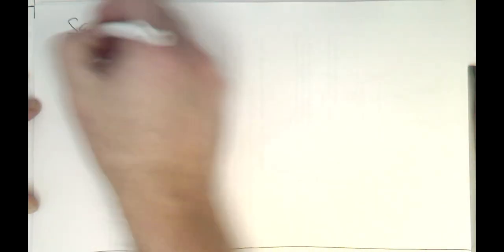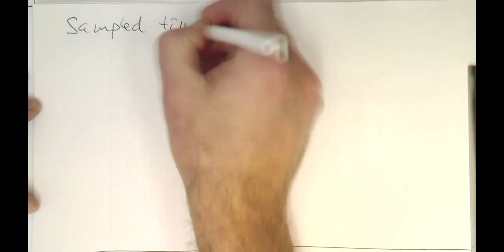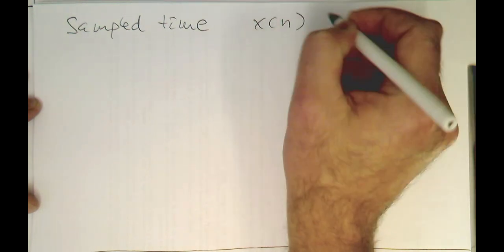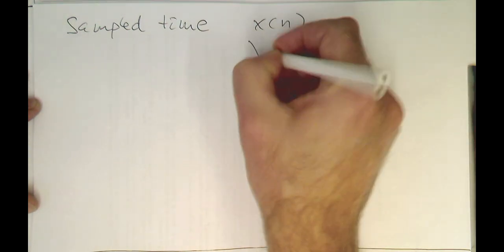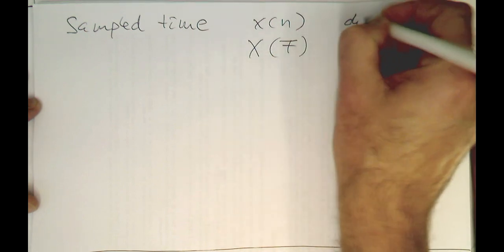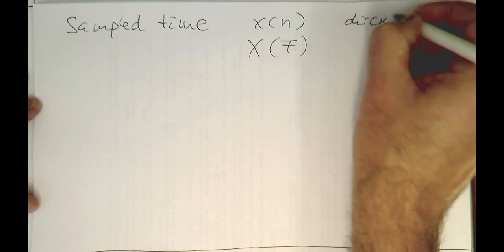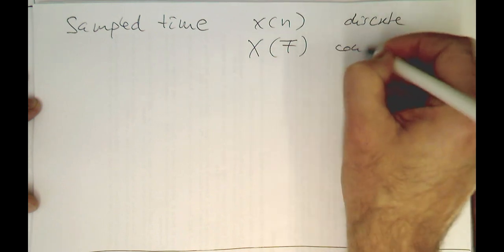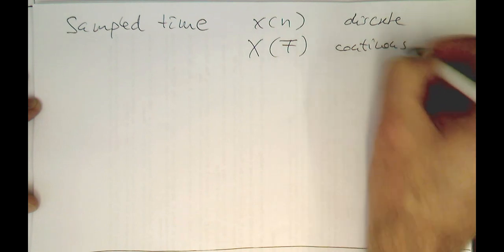So let's look now at sample time, so that we have x of n, but we have still, our frequency is still x of f, so that's discrete samples, but we have still continuous frequency.